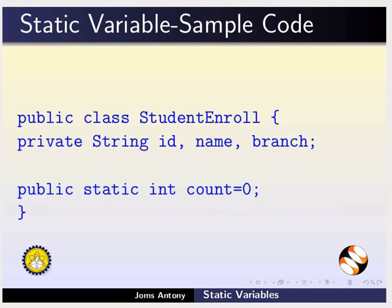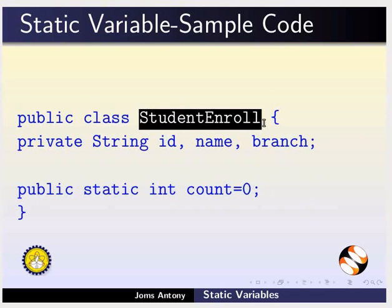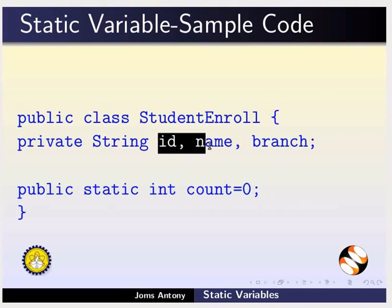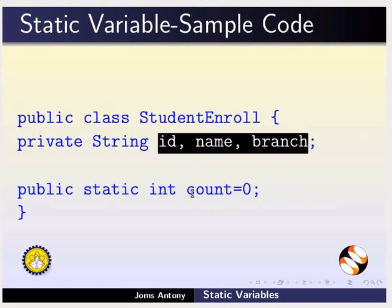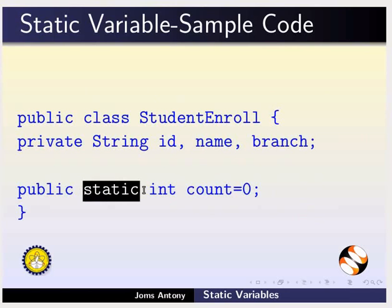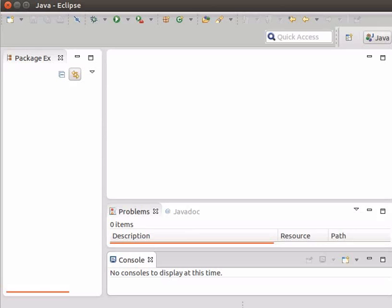Now let us look at the sample code representing the student enrollment class. The name of the class is StudentEnroll. The instance variables are declared as id, name and branch. The variable count is declared as static since it is common to the whole class.